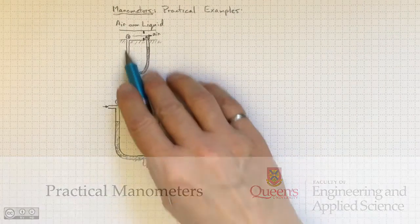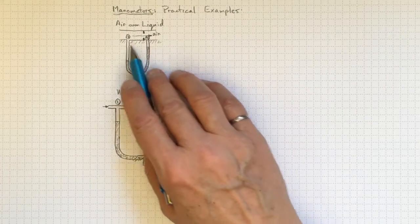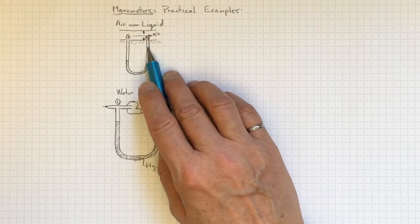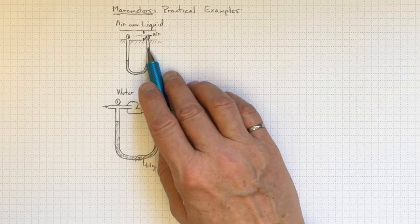Let's look at some practical examples for U-tube manometers. One possibility would be if we had an airflow and we were using a liquid in our manometer, something like water or perhaps a specialized oil manometer fluid.